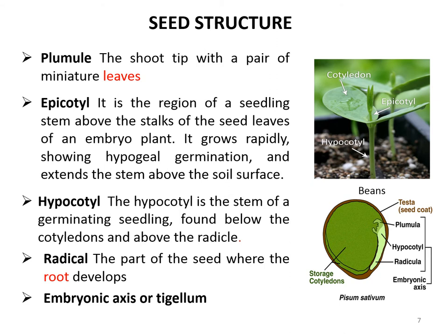The epicotyl grows rapidly, showing hypogeal germination, and extends the stem above the soil surface. The hypocotyl is the stem of germinating seeds found below the epicotyl and above the radicle. The radicle is the part of the seed where the root develops. The plumule, epicotyl, hypocotyl, and radicle form the embryonic axis. Thus the embryonic axis and the cotyledon together constitute the embryo — the baby plant — which is the essential part of a seed.